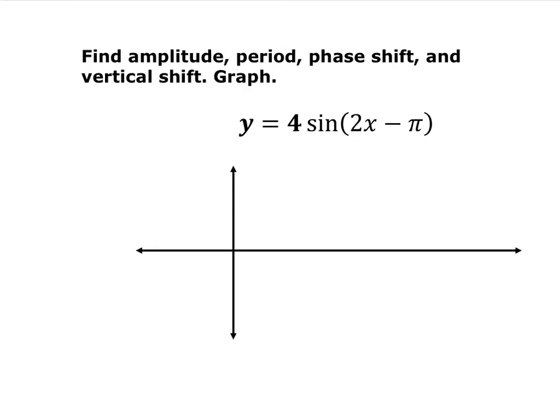So now we want to find the amplitude, period, phase shift, and vertical shift of this trig function and graph. Before you do anything, whenever you have a number multiplied by x, you always want to factor it out. So if you factor out the 2, you get 4 sine of 2 times the quantity x minus π over 2.